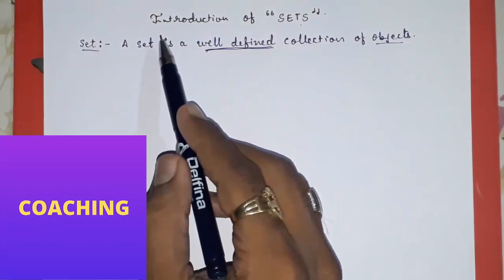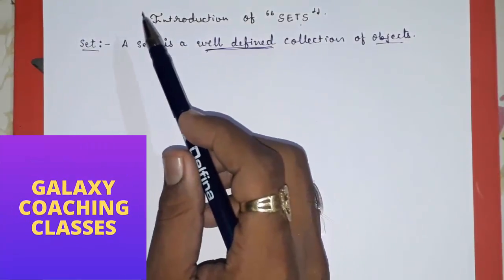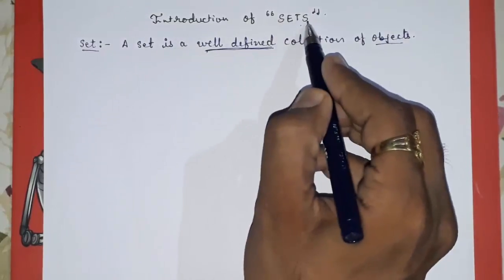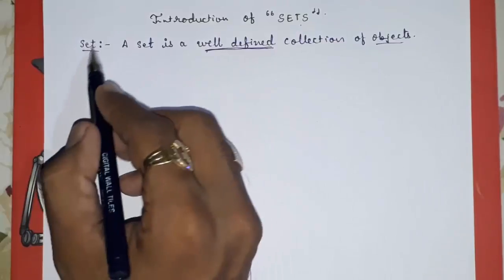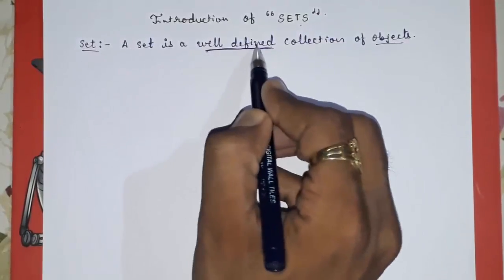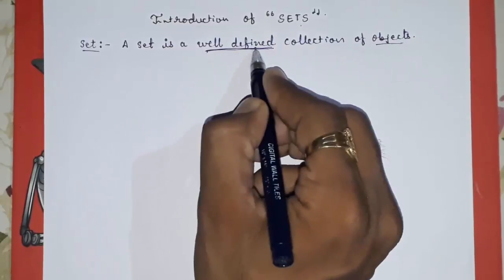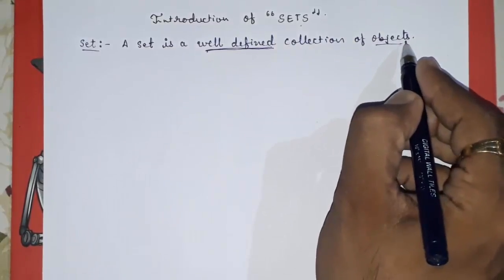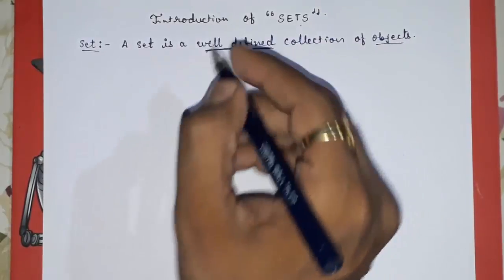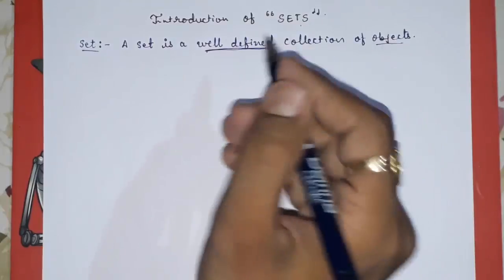Hello friends, today we are going to study CBSA Class 11, Chapter 1: Sets. So, introduction of sets. What is a set? A set is a well-defined collection of objects. It is called well-defined because we can directly give the answers and we don't get confused.